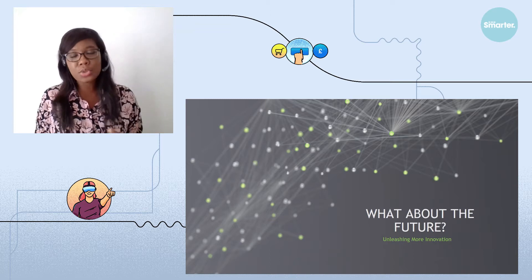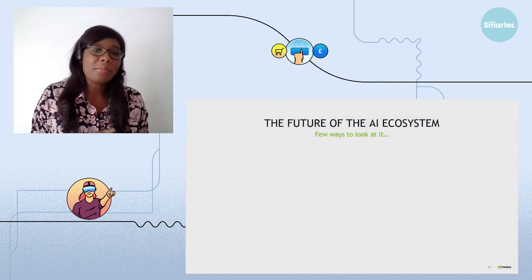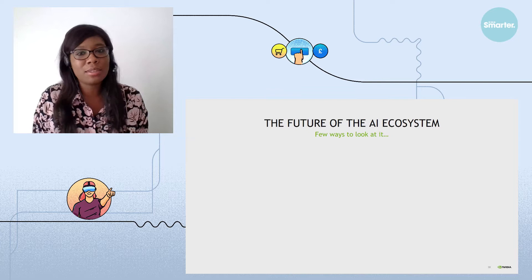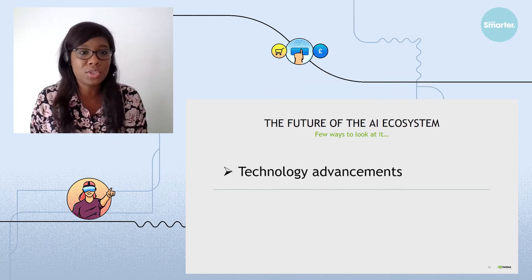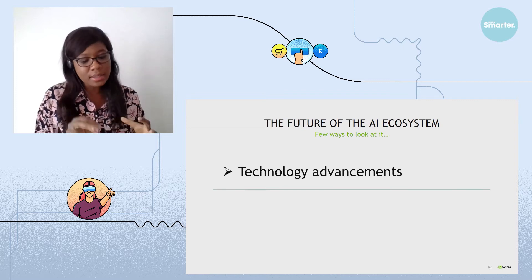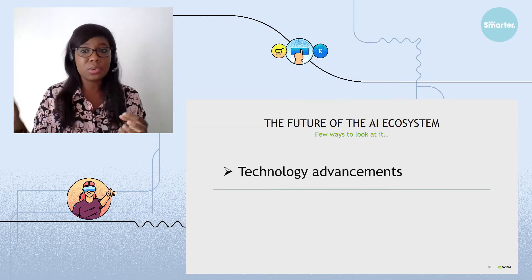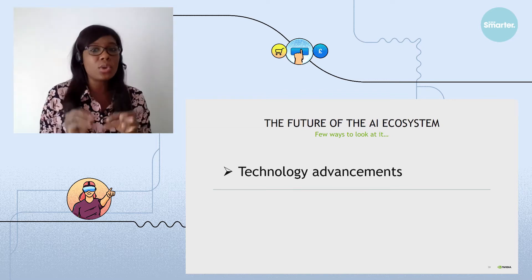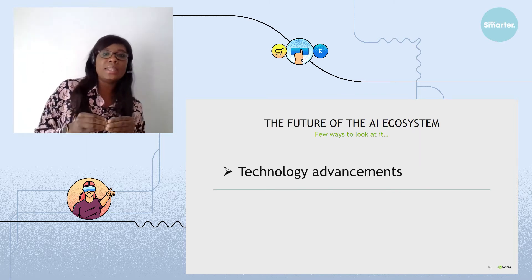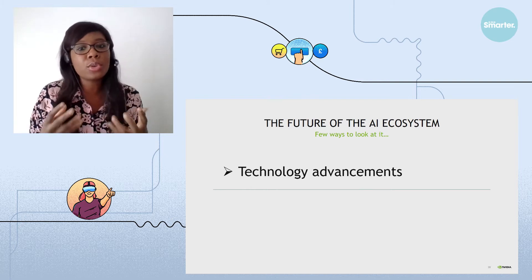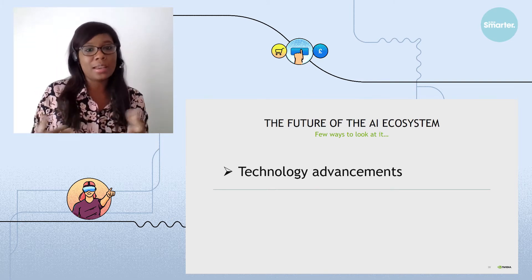So what about the future of the AI ecosystem? When I get asked the question, I actually look at it from three different standpoints. The first one is the future of technology and technology advancements. AI technology is continuously improving and it's moving so fast. But if there is one trend I could leave you with today would be the move towards real time AI.